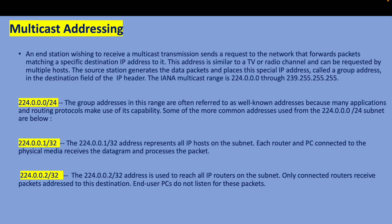For multicast addressing, the end station wishing to receive a multicast transmission sends a request to the network matching a specific destination IP address. The multicast group address is similar to a satellite TV or radio channel and can be requested by multiple hosts. The source places this multicast group address in the destination field of the IP packet. The multicast range is 224.0.0.0 through 239.255.255.255.